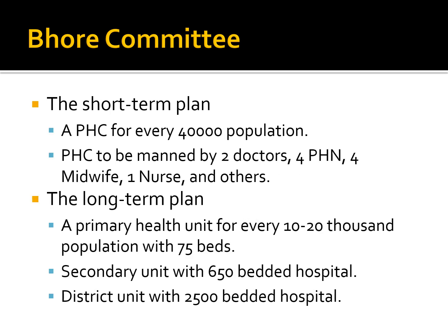The Bhore Committee's short-term plan provided primary health care for every 40,000 population, to be managed by two doctors, four primary health nurses, a midwife, one nurse, and others. The long-term plan called for a primary health unit for every 10,000 to 20,000 population with 75 beds, a secondary unit with a 650-bed hospital, and a district unit with a 2,500-bed hospital.